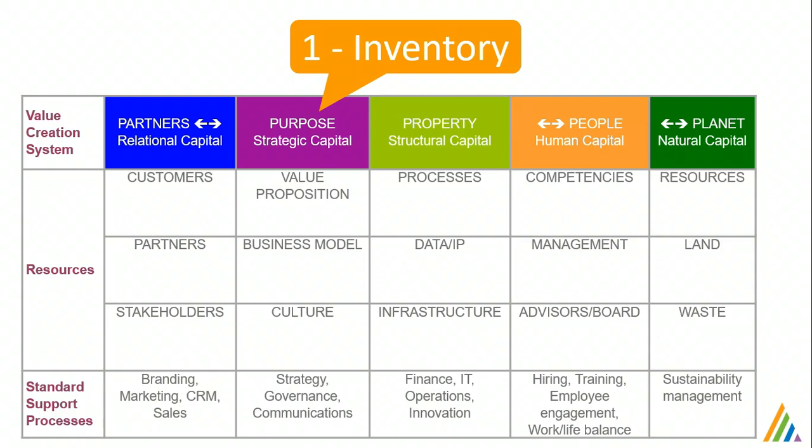If you want to get started filling this out, I recommend starting in the upper left-hand corner — who are your customers? Moving to the right, how do you create value for them? What's your value proposition? Then, what are the core processes that you've developed to deliver on that value proposition? Processes are one of the really key resources of every organization today. It may be production, it may be service, it may be project management — whatever it is you do to deliver on your value proposition in a consistent way.